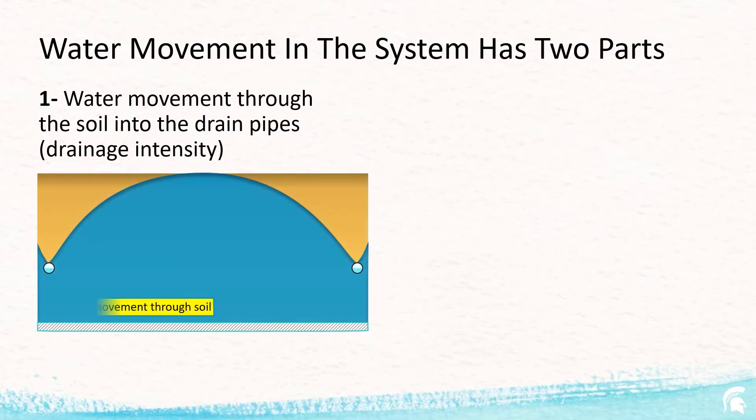And you can see in this graph, drainage intensity depends on drain depth, drain spacing, depth to the restrictive layer, saturated hydraulic conductivity of the soil, and pipe material.